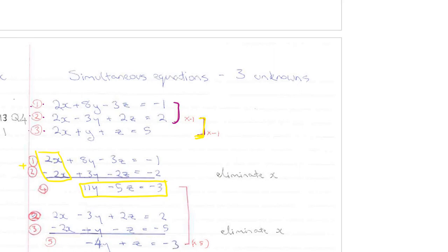That will allow me to get rid of my x's again. So, multiplying equation 3 by minus 1, multiplying everything there by minus 1, and adding it on to equation 1, I am left with 2x minus 2x, which is 0, minus 3y minus y, which is minus 4y, and 2z minus z, which is plus z, and 2 minus 5, which is minus 3. This leaves me with another new equation in y and z, which I have called 5.